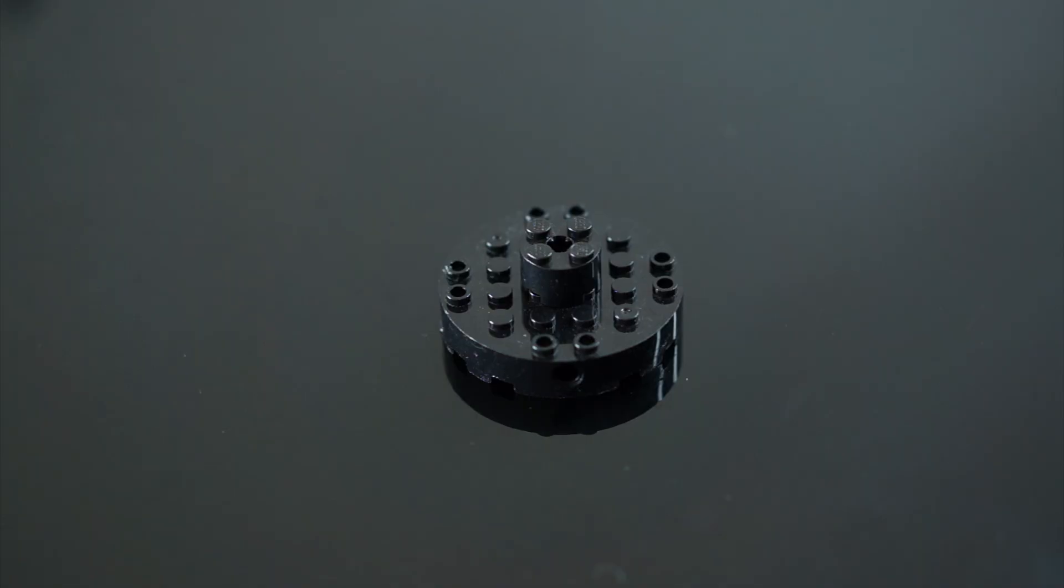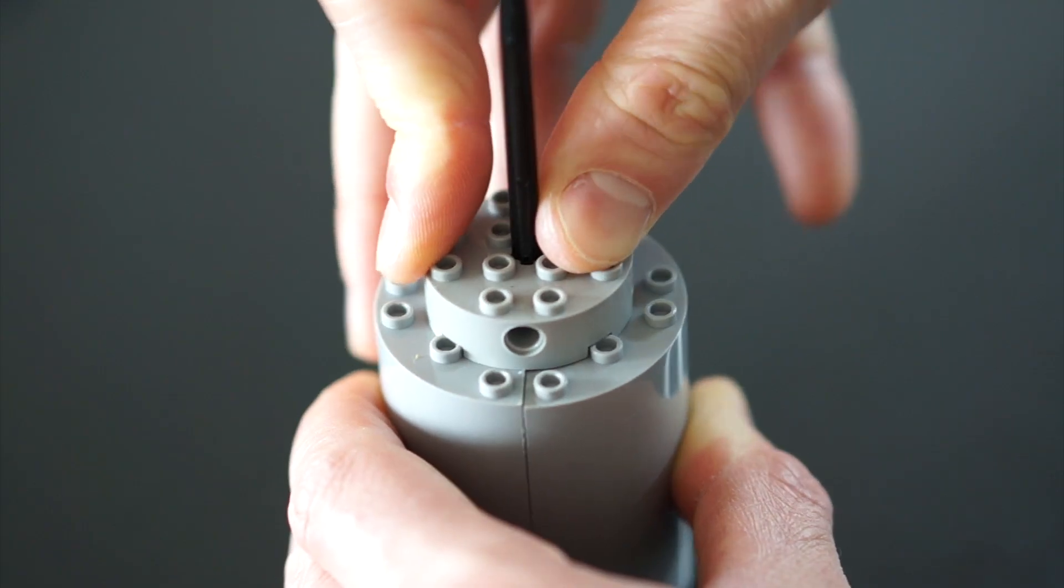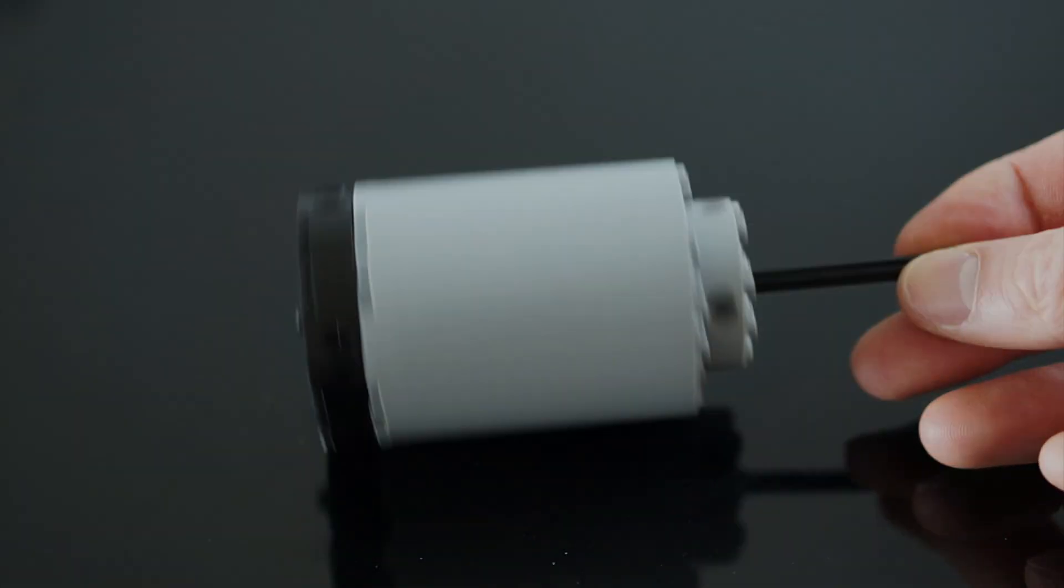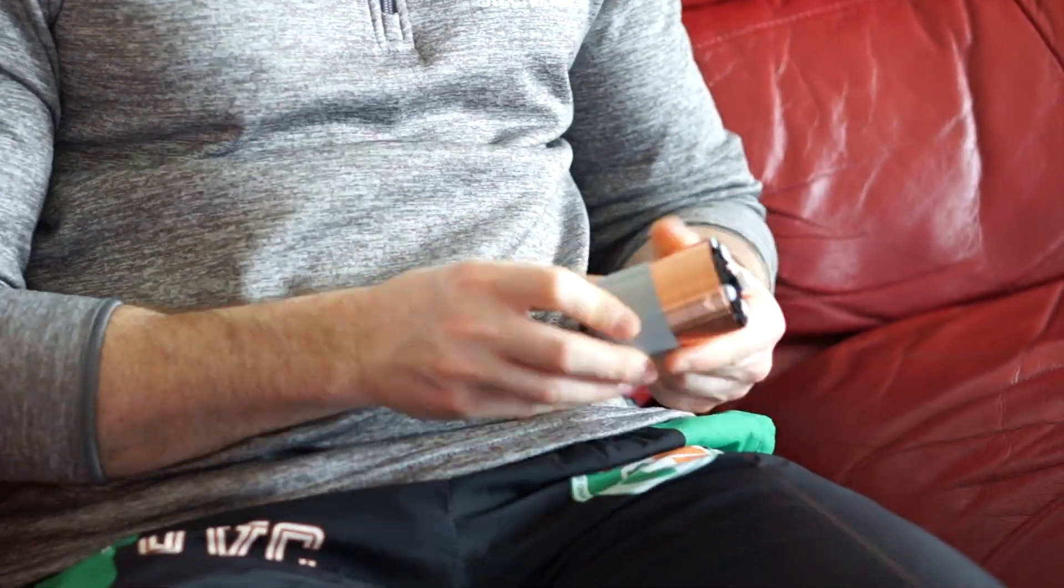We're gonna dump that energy from each spark into a secondary coil with a ton of windings. These pieces will form the tower. I'll wrap around 300 turns of thin 32 gauge wire around it.